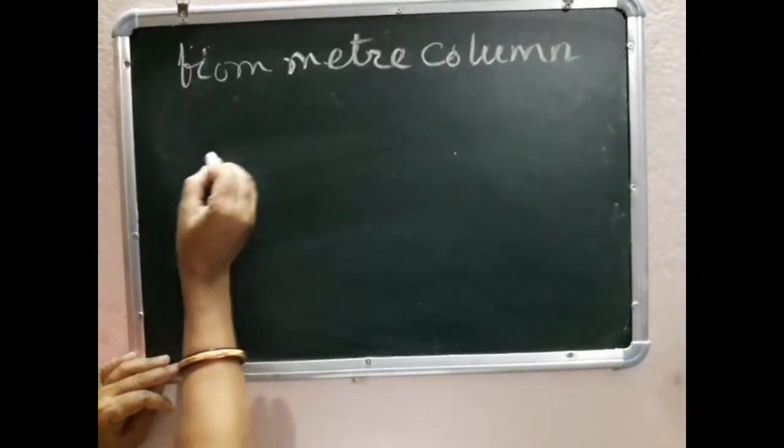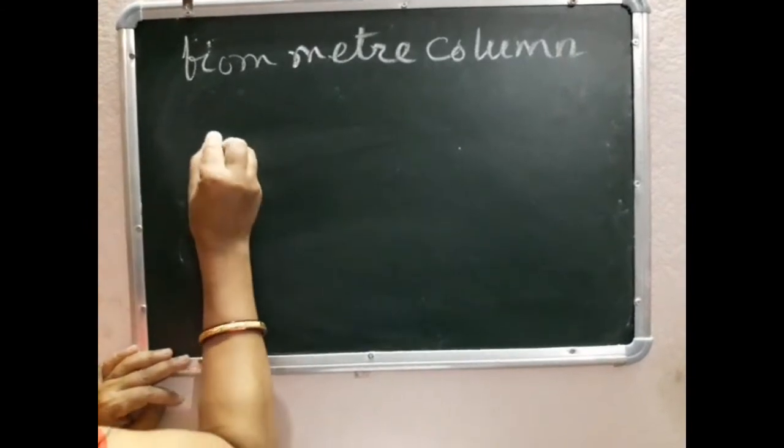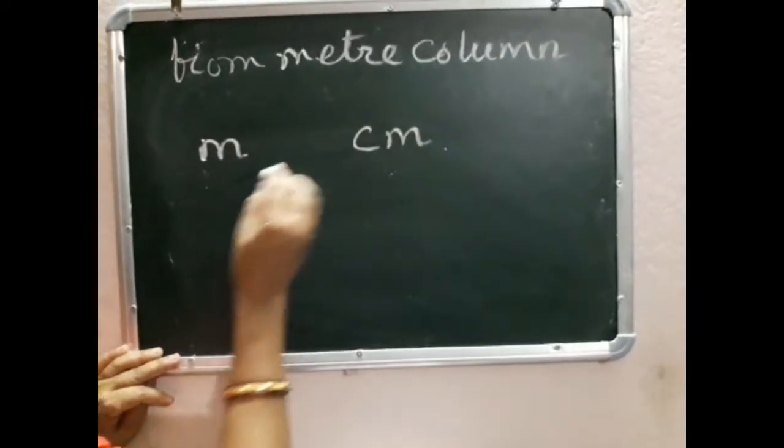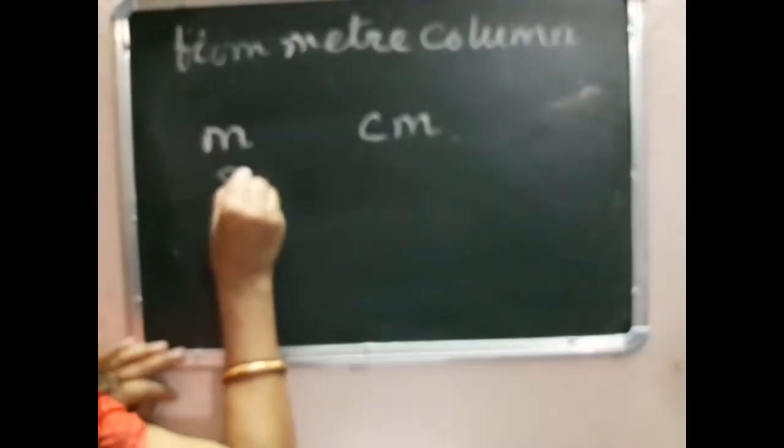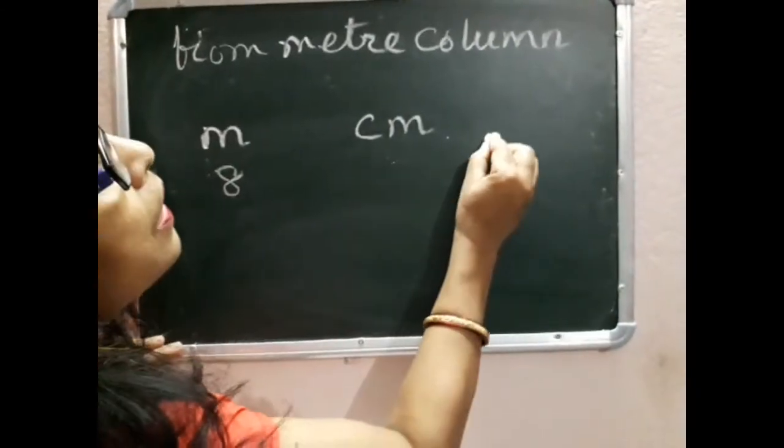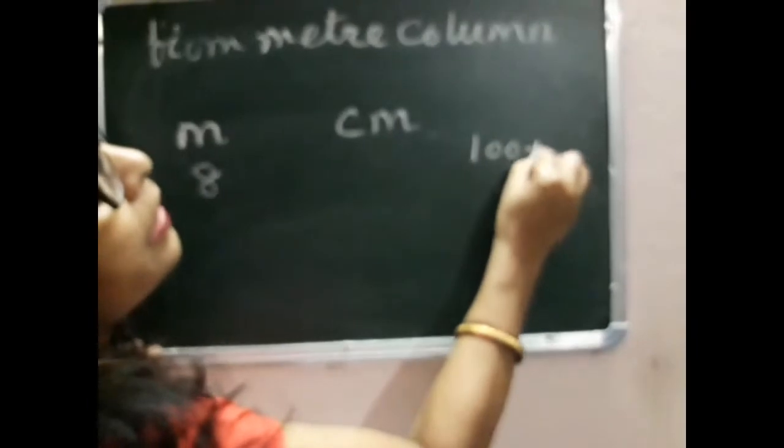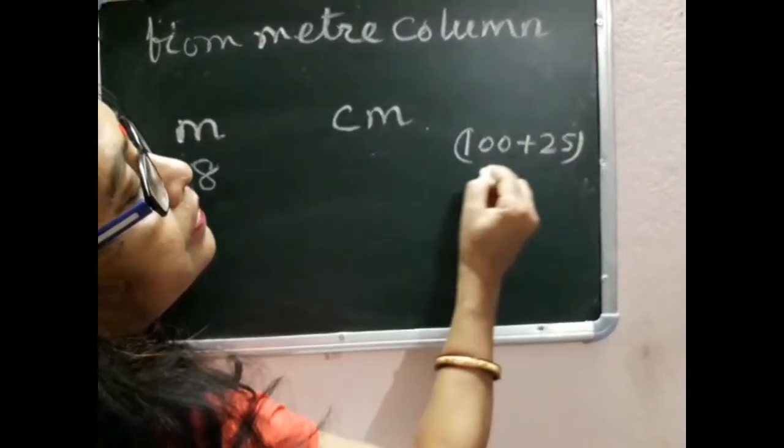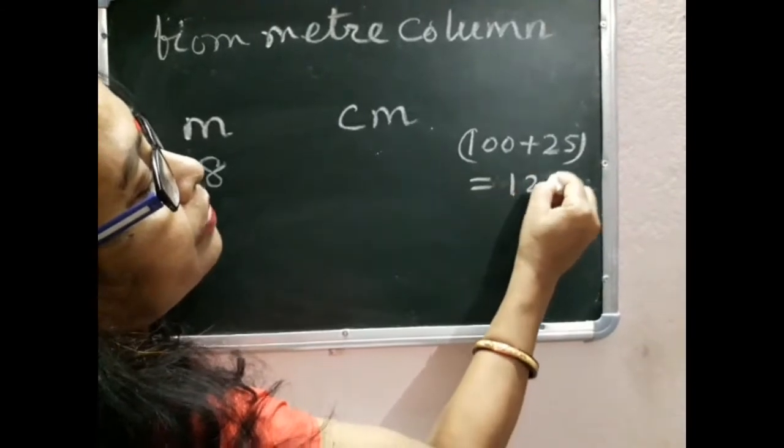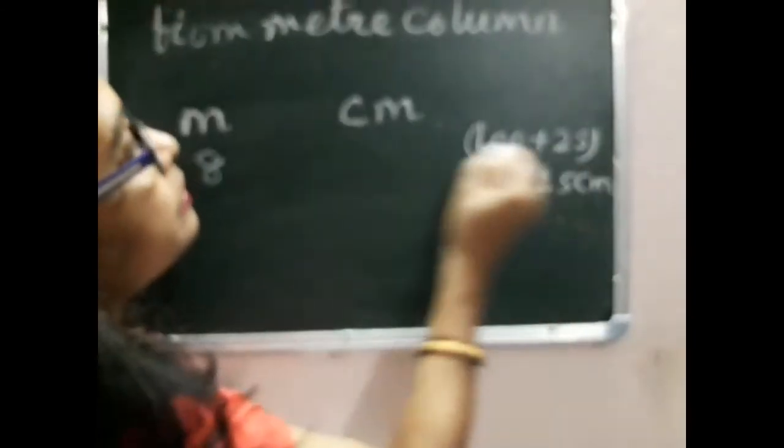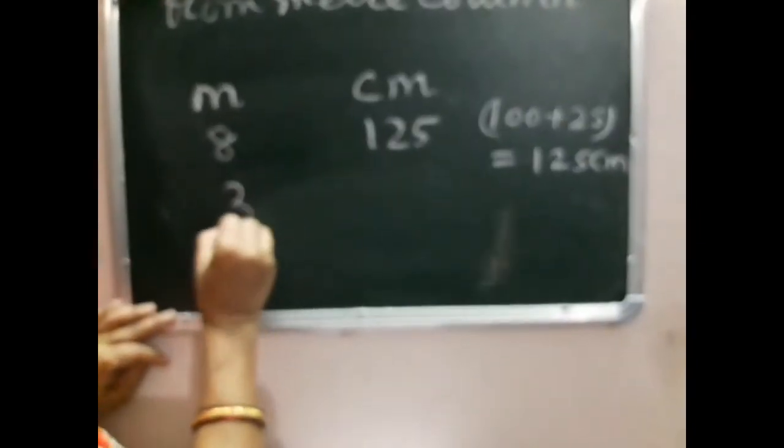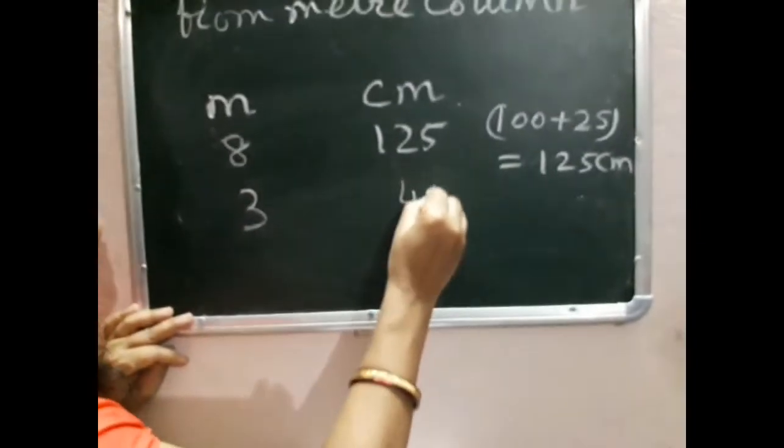That is, the number becomes 8 in the meter column, and 100 plus 25 equals 125 centimeters. Now we have 125 centimeters and 3 meters, and 44 centimeters.